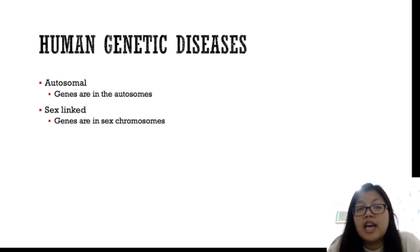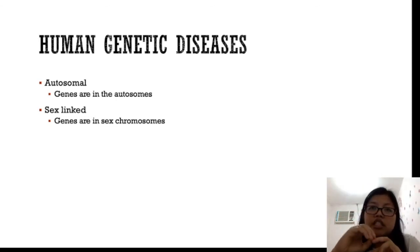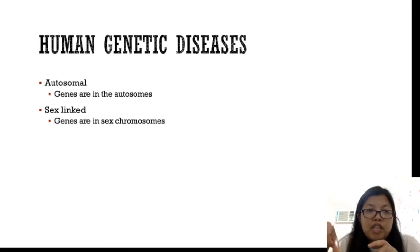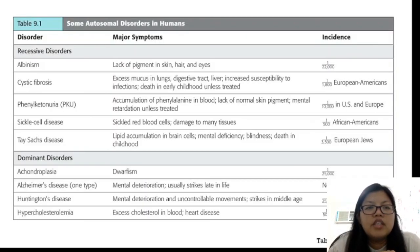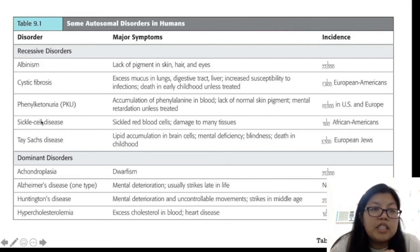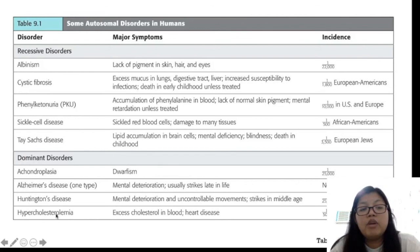Remember, human genetic diseases have two types: autosomal and sex-linked. What we discussed today is sex-linked. Autosomal diseases are coded in chromosomes 1 to 22, while sex-linked diseases are on the sex chromosome, the 23rd pair. There are autosomal recessive disorders such as albinism, cystic fibrosis, phenylketonuria, sickle cell disease, and Tay-Sachs disease, as well as autosomal dominant disorders such as achondroplasia, Alzheimer's, Huntington's disease, and hypercholesterolemia. That's it — see you for the next lecture.